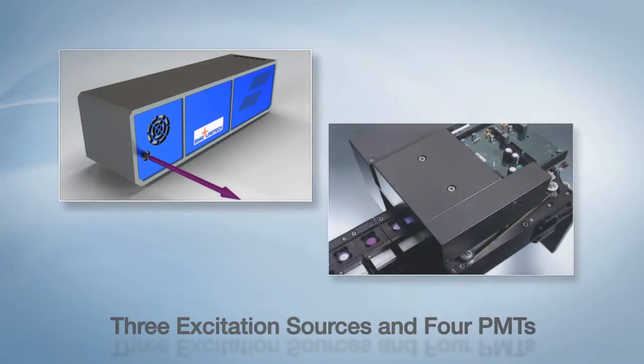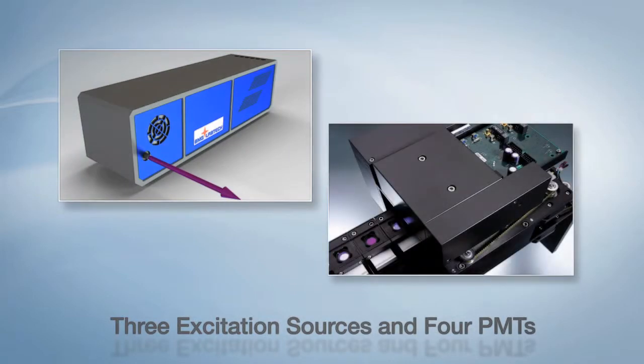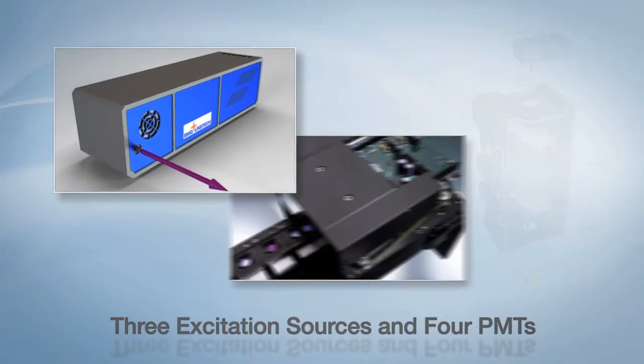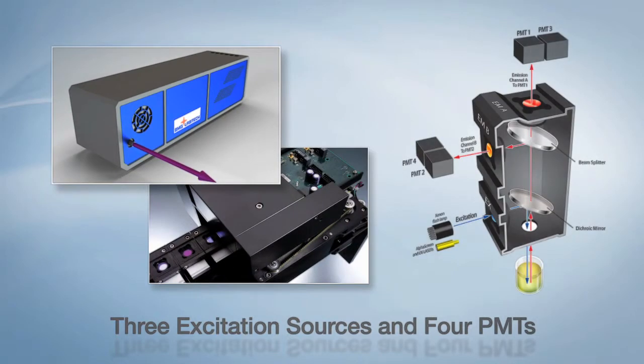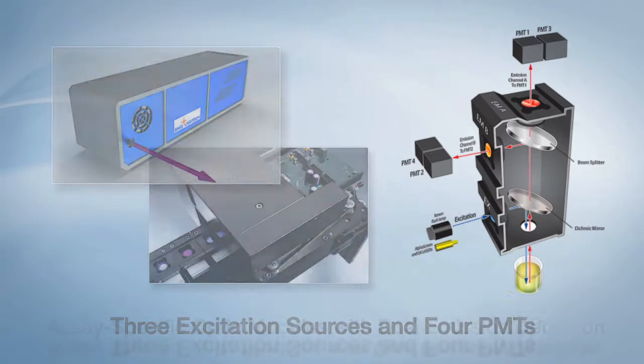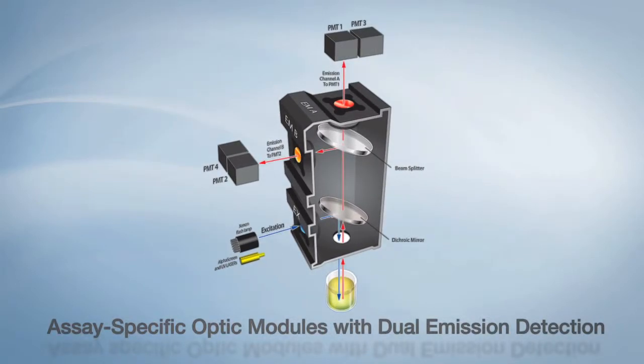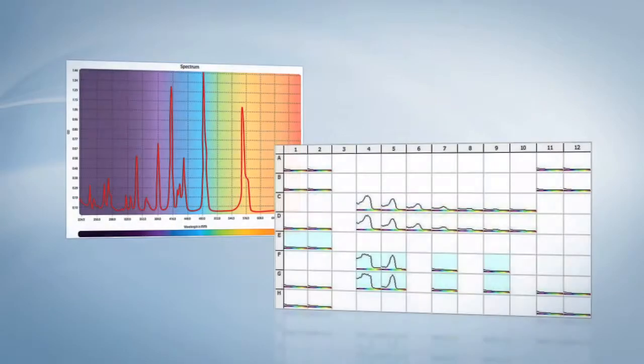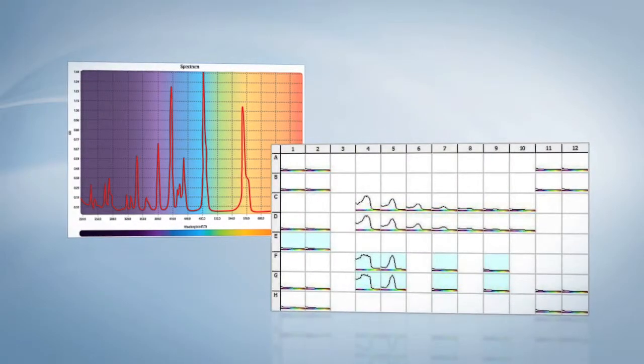The Ferristar FS uses a unique blend of technologies not found on any other microplate reader: three excitation sources comprised of two lasers and a high frequency broadband light source. For detection, the Ferristar FS has four photomultiplier tubes incorporating simultaneous dual emission and a UV visible spectrometer for instant full spectral analysis.